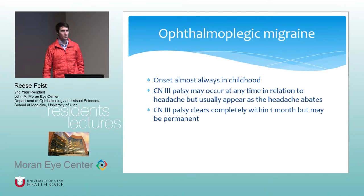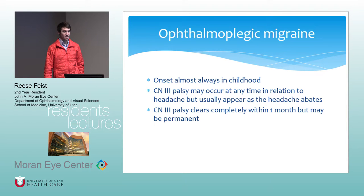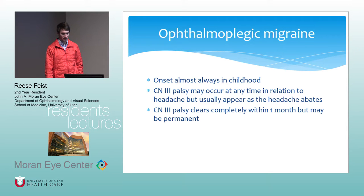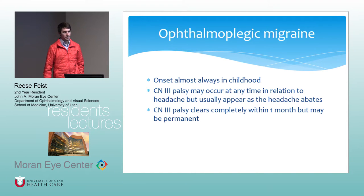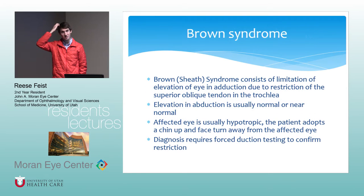Ophthalmoplegic migraine is more in the headache category, but migraines can cause binocular double vision and can mimic a third nerve palsy. Classically you'd expect this to resolve, but the deficit could be permanent. The cranial nerve finding usually starts to come on after the headache abates or as it begins to abate.